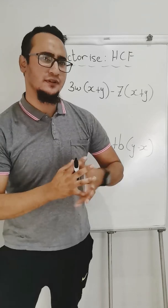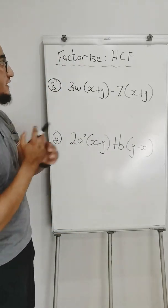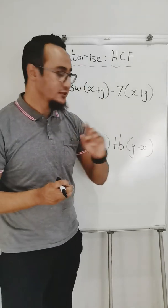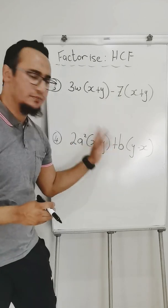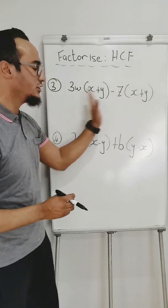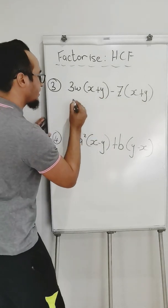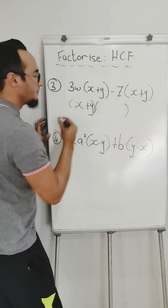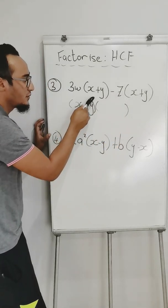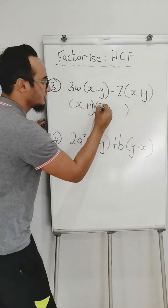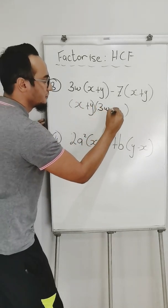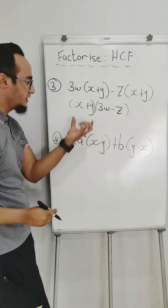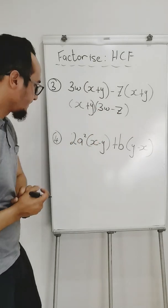On to example number three and four. First, remember, I'm looking for a common factor, highest common factor. I have two terms. What separates one term from another? A minus sign or a plus sign. So what is common in both terms? It could be this whole bracket. So I write the whole bracket. Then what goes into my next bracket? Basically, whatever is in front of this. What's in front of it? A 3w minus. What's in front of my (x+y) over here? The negative z. And that is my answer. These are my two factors.